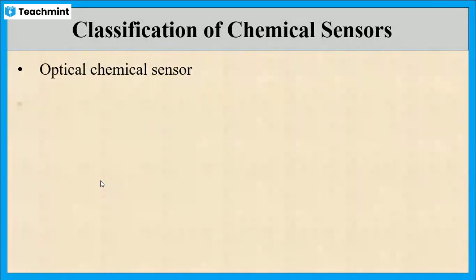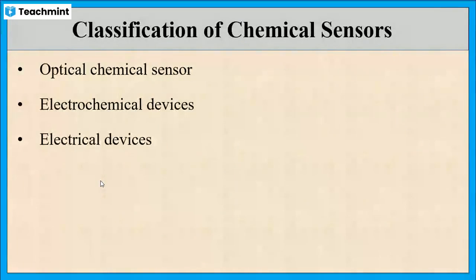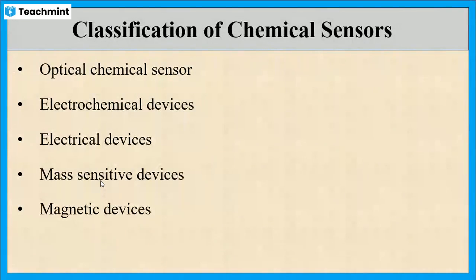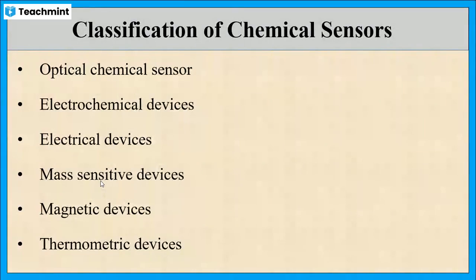There are different types of chemical sensors, which include optical sensors, electrochemical sensors, thermometric sensors, etc. We will discuss all these sensors in detail in the next sessions.